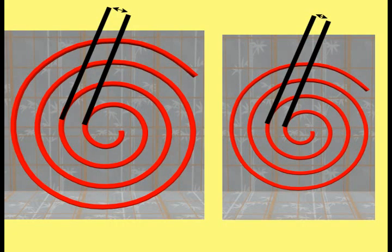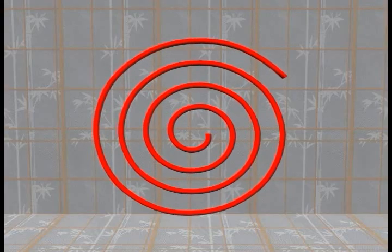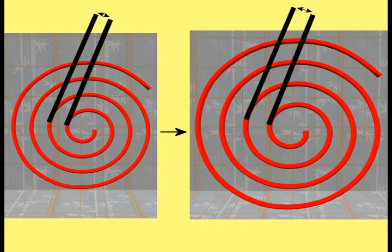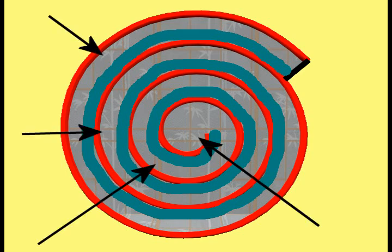The gaps between the lines of the spiral have a certain volume that can hold a certain amount of material. If the lines are compressed towards the center, the gaps shrink and their volume decreases, forcing some material out. If the lines are then moved back to their previous location, the volume of the gaps becomes larger. Because there is not enough material to fill the now larger gaps, empty spaces are created, which pull material in from outside the spiral.